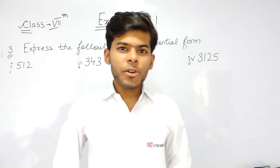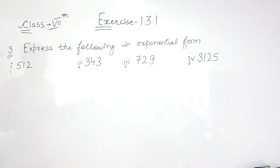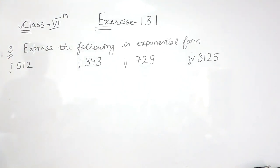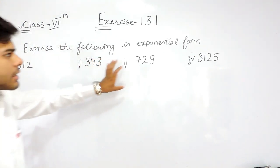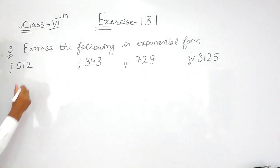Hello everyone, this is the third question of exercise 13.1 on exponents for class 7. In this question, there are four parts that have been given to us, and we need to express these parts in their exponential form. As I told you what exponential form is, let's convert.